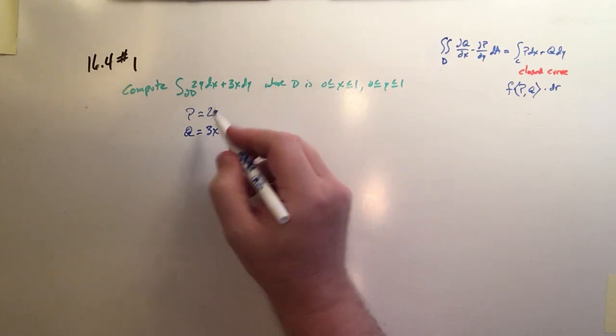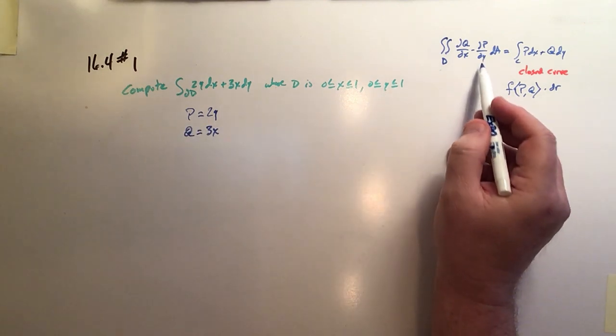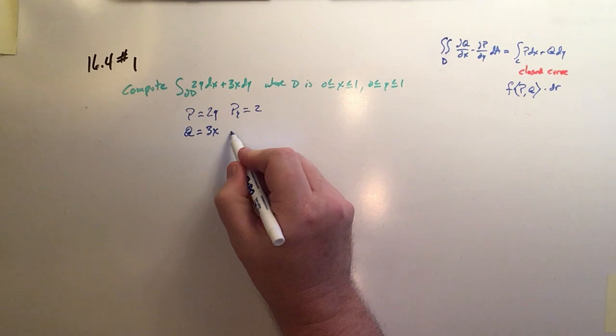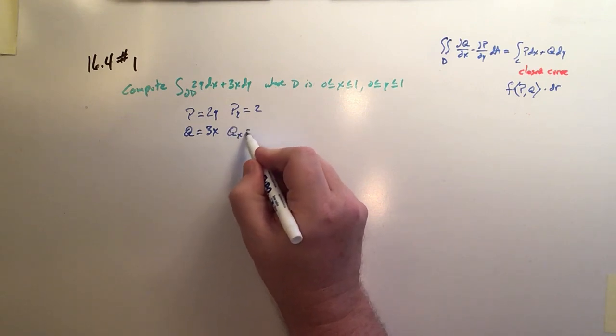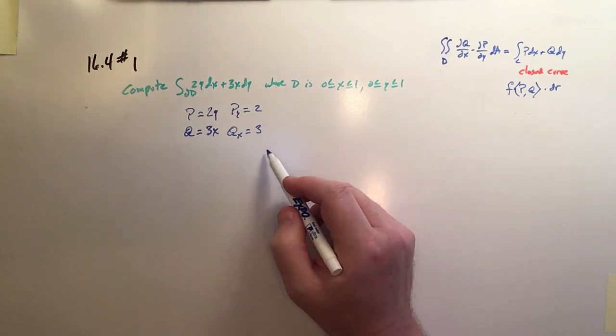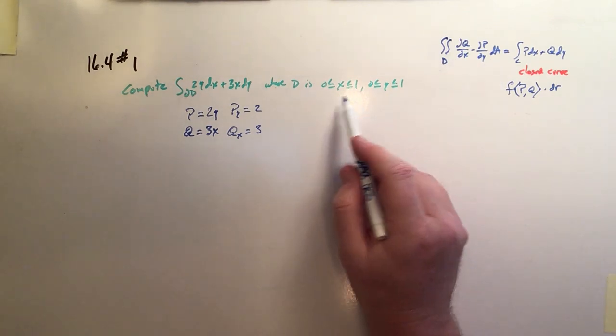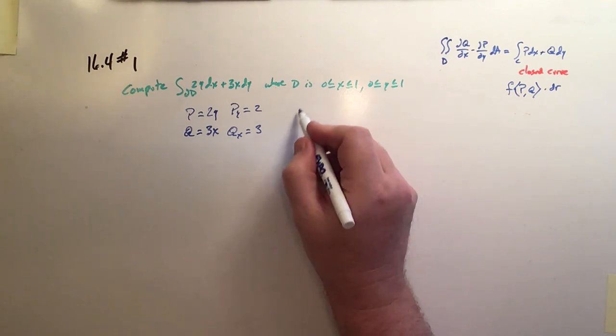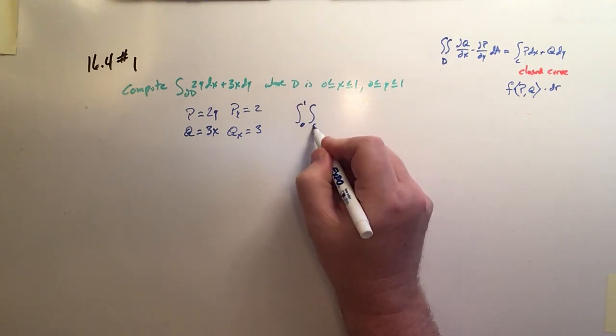Okay, so here's what we're going to do. The partial of p with respect to y is equal to 2, and the partial of q with respect to x is equal to 3. And the difference between those is 1, and we just want to integrate that over the area. The area is easy because it's just x and y, both between 0 and 1. So the limits are interchangeable.